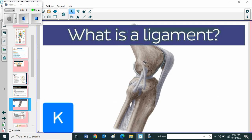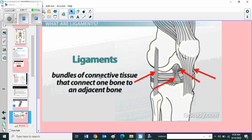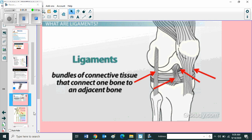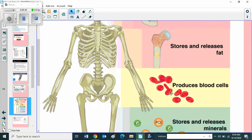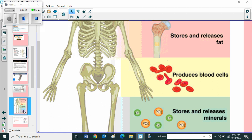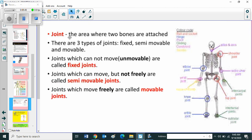What is a ligament? Ligaments are bundles of connective tissue that connect one bone to an adjacent bone. Then protects internal organs, stores and releases fat, produces blood cells, stores and releases minerals. Joint. Children's next we are going to learn about joint. What is joint? Joint means the area where two bones are attached.